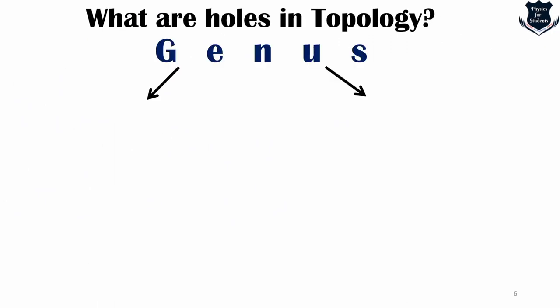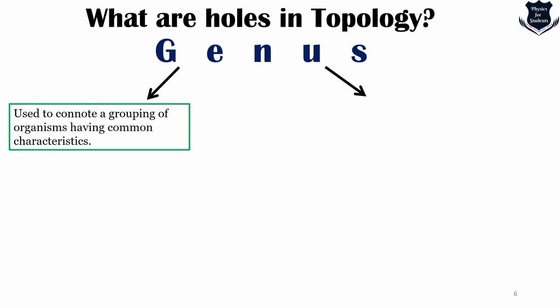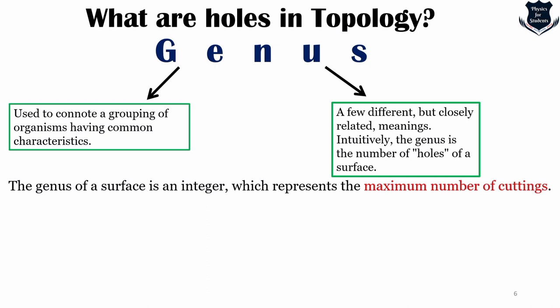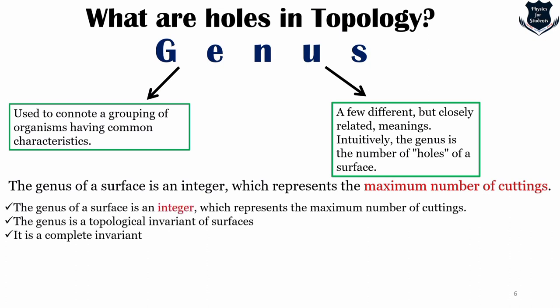In mathematical sense, the genus — whose plural is genera — has a few different but closely related meanings. Intuitively, the genus is the number of holes of a surface. In biology, genus connotes a group of organisms having common characteristics. In mathematics, many topological terms are closely related to biology — for example, genus and homology. The genus of a surface is an integer representing the maximum number of cuttings you can make without the object falling apart. The genus is a topological invariant of surfaces and it is a complete invariant. Two surfaces with different genera are not homeomorphic.